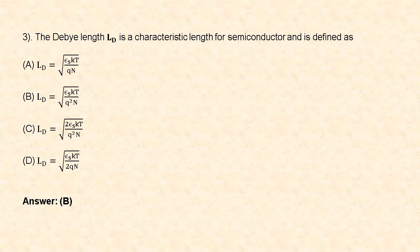Next question: the Debye length L_D is a characteristic length for a semiconductor and is defined as L_D = √(ε_s · kT / (q² · 2N)). So option B is correct.